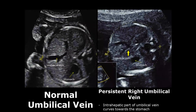A persistent right umbilical vein occurs when the intra-hepatic component of the umbilical vein curves towards the stomach instead of curving to the right side. Here you can see the umbilical vein curving towards the right side, and over here it is curving towards the left side towards the stomach.